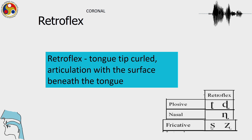Retroflexes are produced with the tongue tip curled and articulation where the surface beneath the tongue is curled up and the target area is that of the post-alveolar region. These are symbols used to show retroflexes: da, da, na, shah and shah.